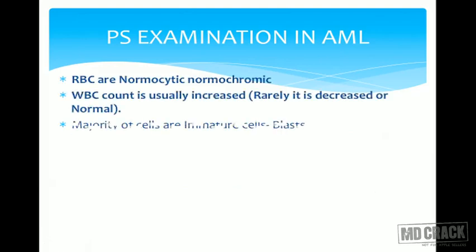Peripheral smear findings in AML: RBCs show normocytic normochromic anemia. WBC count is markedly increased. Rarely, leukemias present with normal count or aplastic anemia-like picture — called aleukemic leukemia — but most of the time acute leukemias show very high counts: 1 lakh, 1.5 lakhs, 2 lakhs.